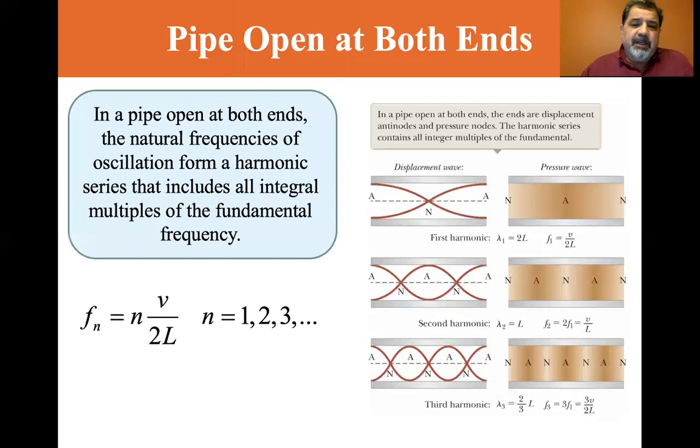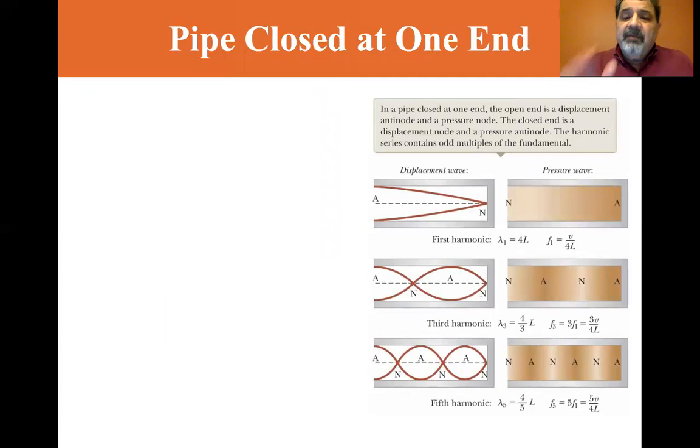So f sub one would be v over 2L. F sub two would be n times v over 2L, which would be v over L, and f sub three would be three halves v over L, and so forth. Now if a pipe is closed at one end, you can see that where it's closed at one end, the molecules aren't free to move at that closed end.